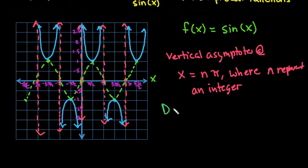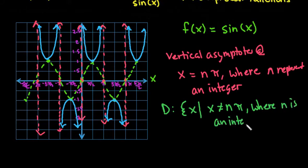So our domain is our x values and our x values are going to be easier to write in set notation. x can be anything except for intervals of π. So remember that we would just use our vertical asymptote. x can be anything except for nπ where n is an integer.